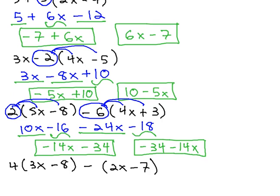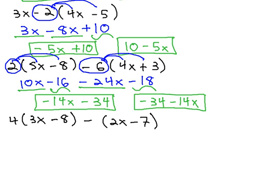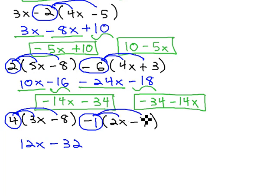Let's try one more example like that. This time though, a little different. We can start by distributing the 4 through the first parentheses. 4 times 3x is 12x, and 4 times negative 8 is negative 32. However, it's not really clear what we're distributing through the second parentheses. Recall that anytime there's no number written in front of something, we always assume the number 1 is there. This means we're distributing negative 1 through these parentheses. Negative 1 times 2x is negative 2x, and negative 1 times negative 7 is positive 7.